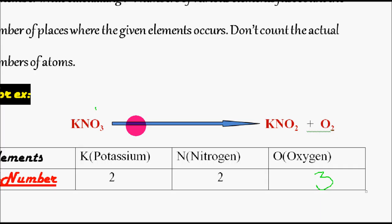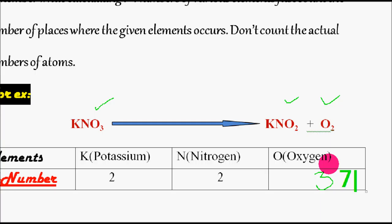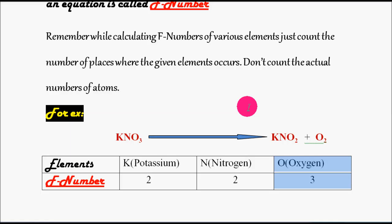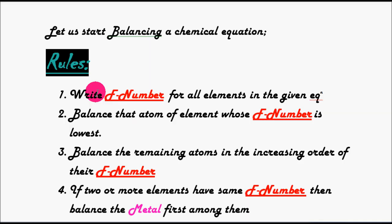In how many places is oxygen existing? Oxygen is existing in 3 places. Sometimes you may get confused — there are 3 oxygen atoms here, 2 here, and 2 here, and you might add 3+2+2=7, but that is a wrong method. You should not add the number of atoms; you have to count the number of places where that atom is existing. So oxygen's frequency number is 3. In this equation, potassium exists in 2 places, nitrogen in 2 places, and oxygen in 3 places — these are the frequency numbers of the different atoms.